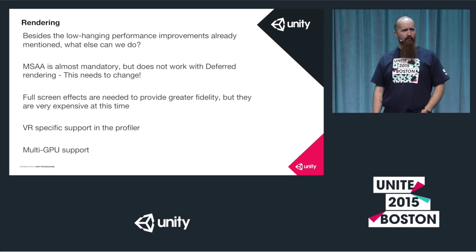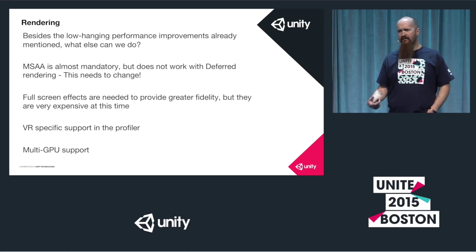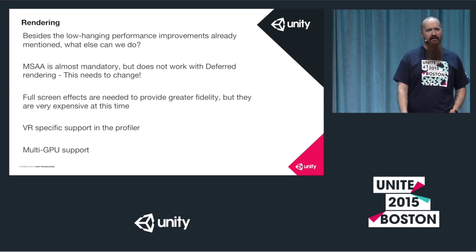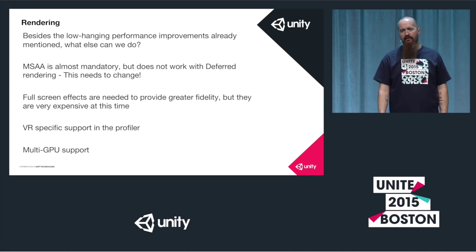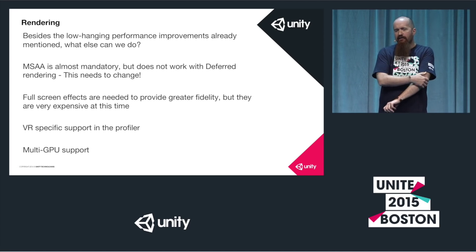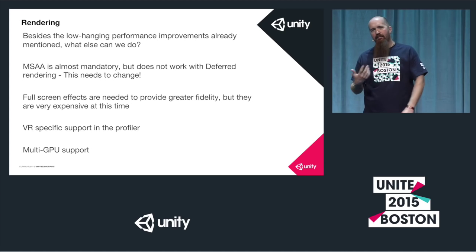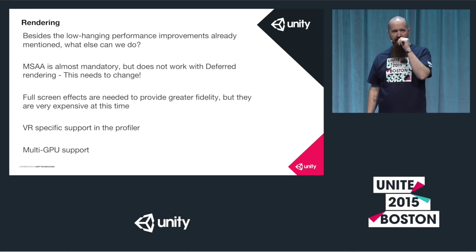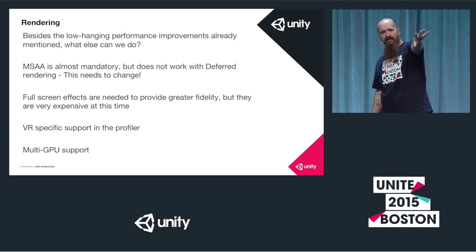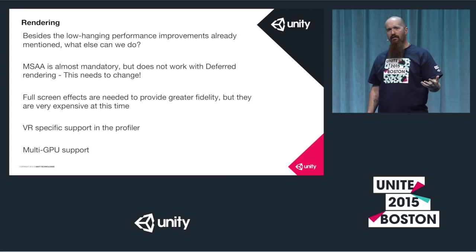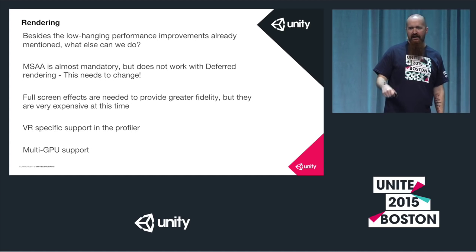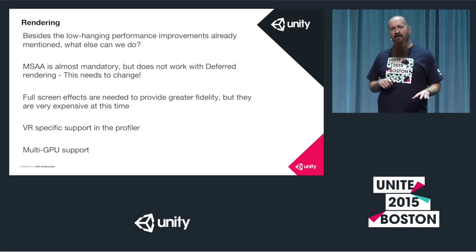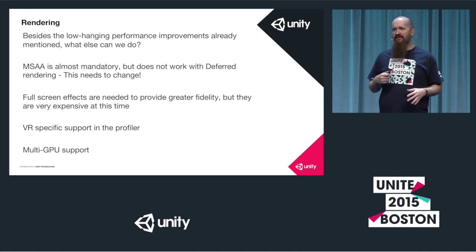We've done some low-hanging performance improvements for shadows, culling, and all of that to reduce workload - we don't want to double the workload because you're rendering two eyes. Most of that's shared since the eyes look the same direction. MSAA is very important, but unfortunately it doesn't work with deferred rendering. That means stuff in the background at far distance looks very blocky and pixelated. It actually takes you out of the experience because your brain switches modes and asks 'what is that?'